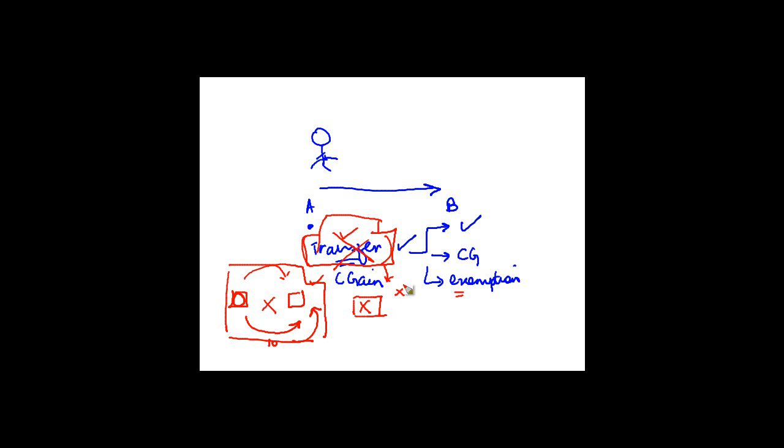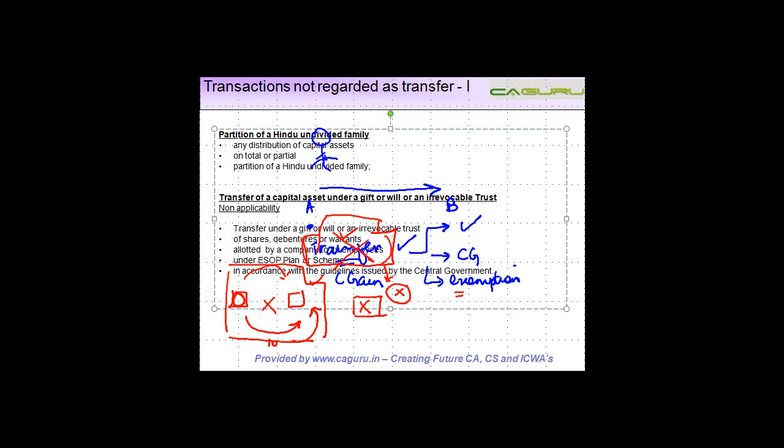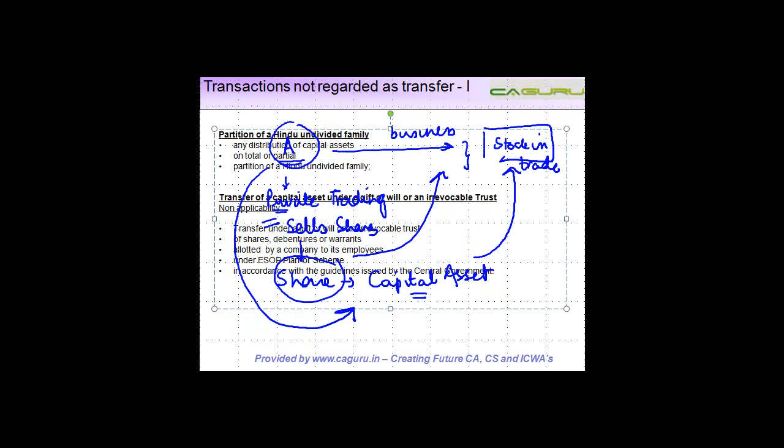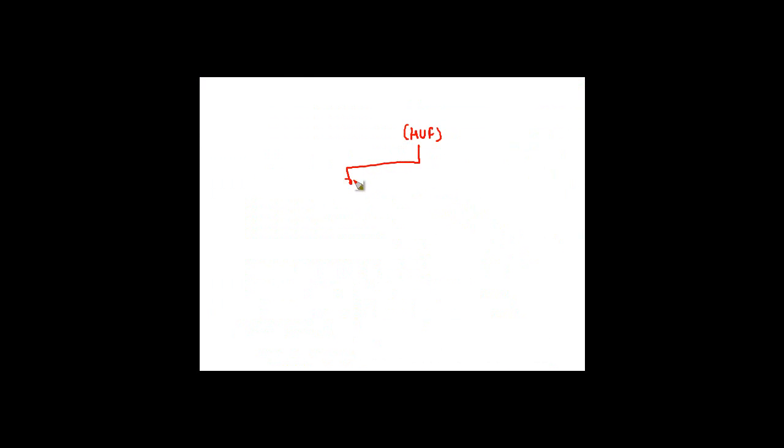Let's see the first one: partition of a Hindu undivided family or HUF as we call it. Now we know an HUF comprises of various members, also known as co-parsons or maybe the karta and others. So an HUF may contain various assets.